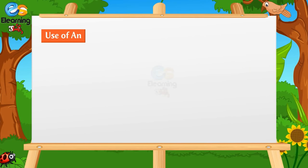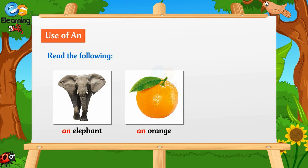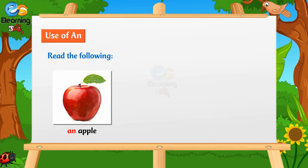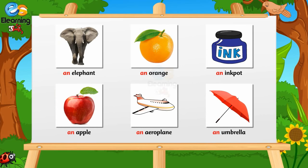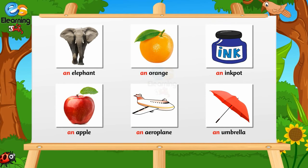Use of AN. Read the following: An elephant, An orange, An inkpot, An apple, An aeroplane, An umbrella. These are also names of things. They are also in the singular number, but all these begin with a vowel sound. We have used AN before all of them.